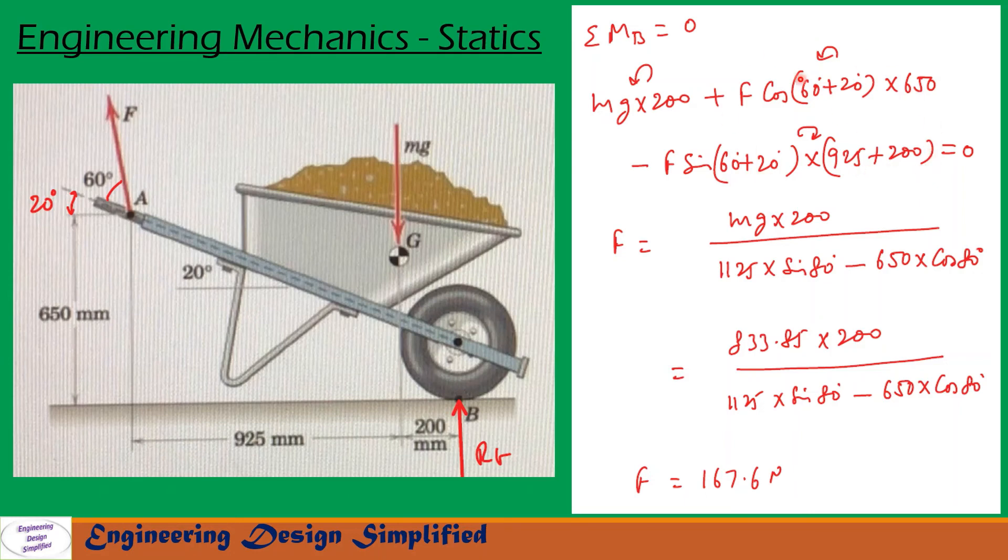From this equation we can write F = MG × 200 / (1125 × sin 80 - 650 × cos 80). That is, this summation of these two values is 1125. So after simplifying this we can get F = 167.6 Newton. So a man should exert a force of 167.6 Newton to produce zero moment about point B.